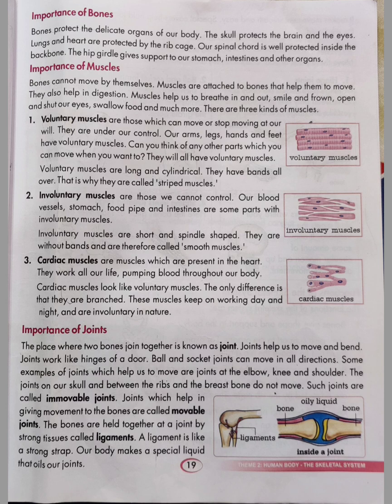There are three kinds of muscles. First, voluntary muscles are those which can move or stop moving at our will — they are under our control. Our arms, legs, hands and feet have voluntary muscles. Voluntary muscles are long and cylindrical with bands all over, which is why they are called striped muscles.